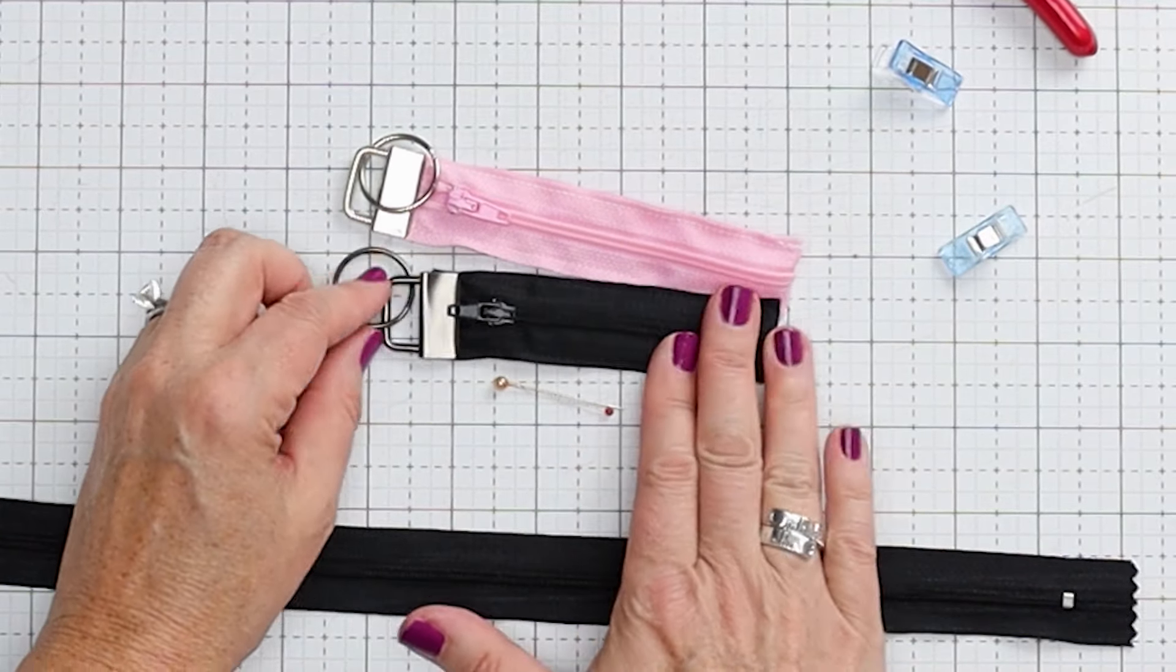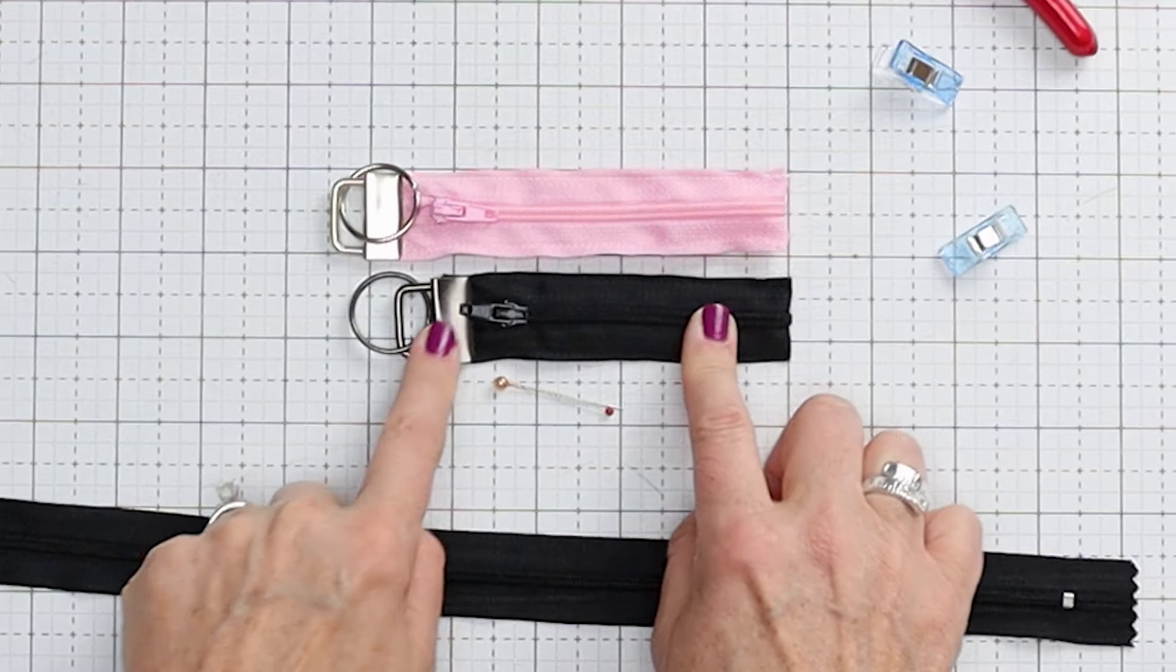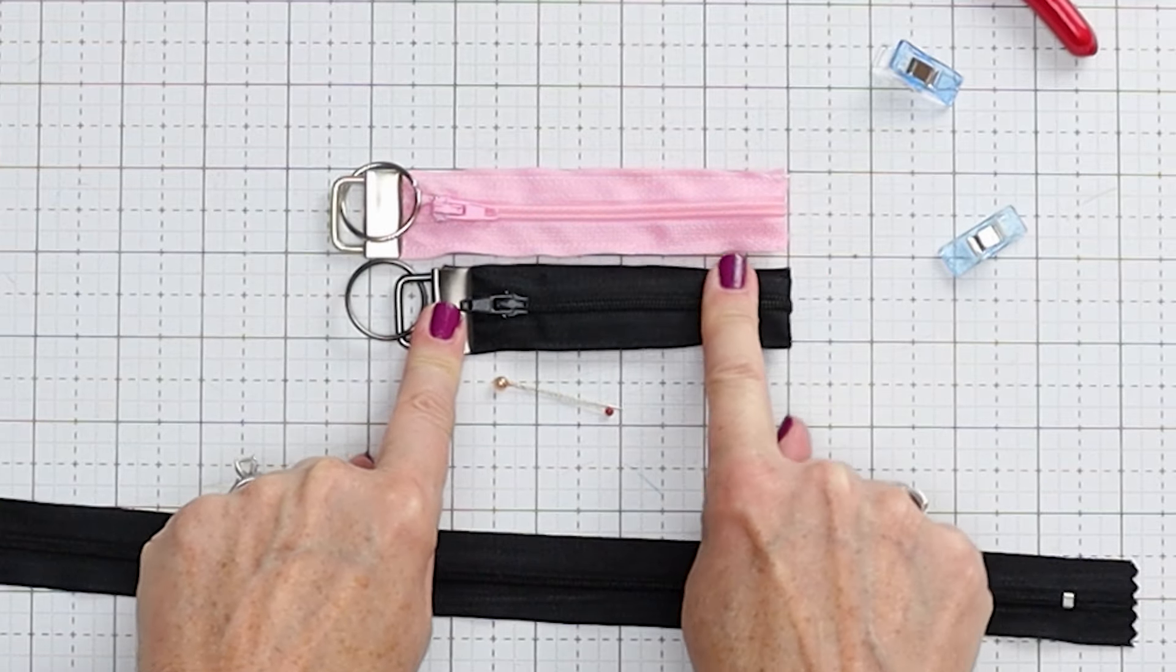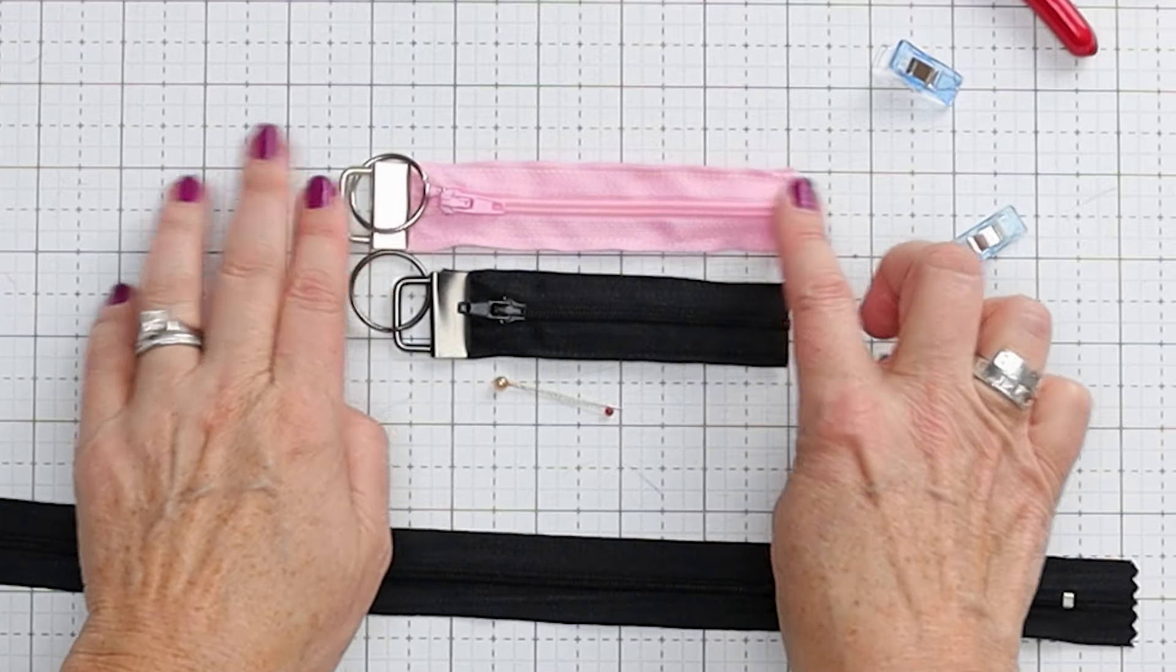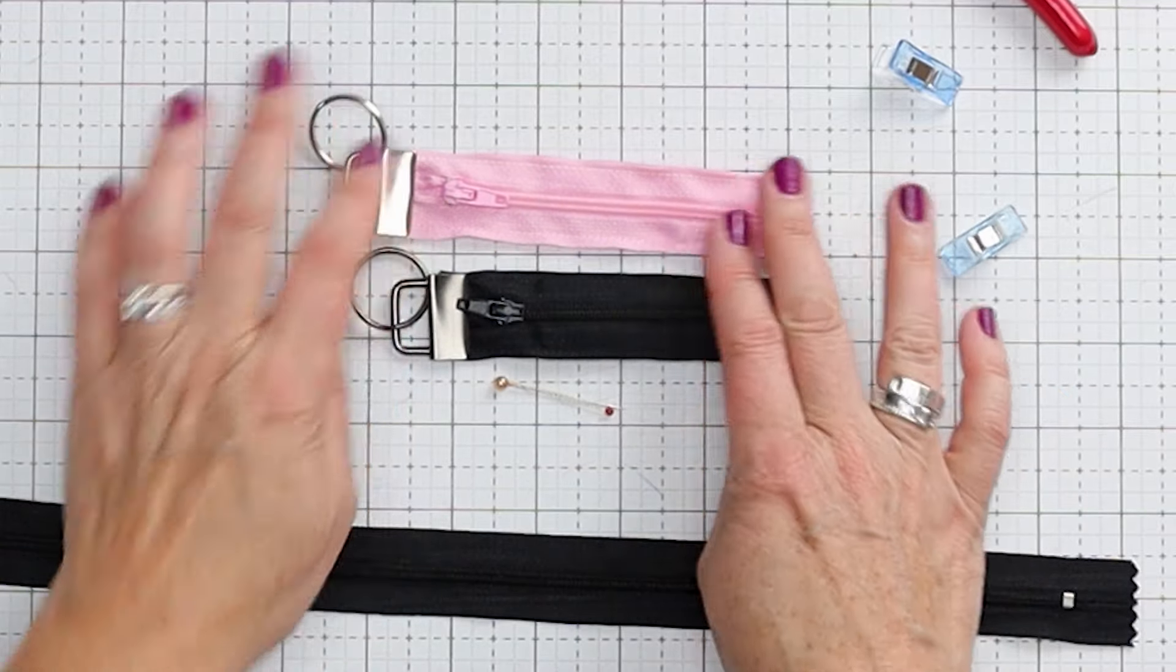Or you could put little love notes for your kids, whatever - get creative. You need it to be at least four inches long if you want to put money in there, American money. You Europeans can measure your money and let me know. Or five inch - you can kind of go with what you like.